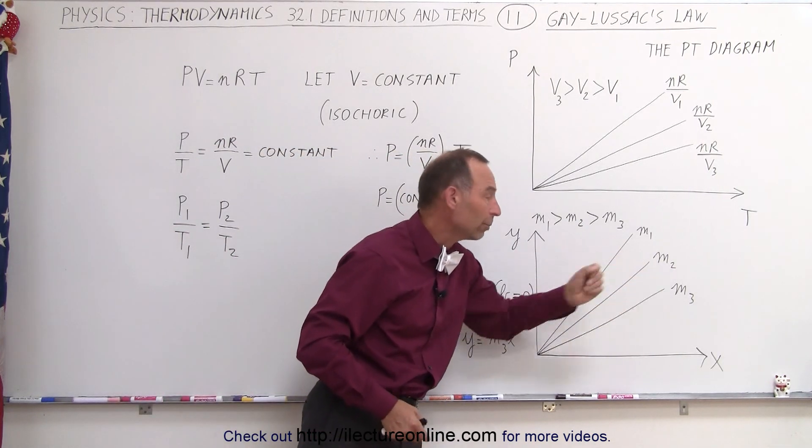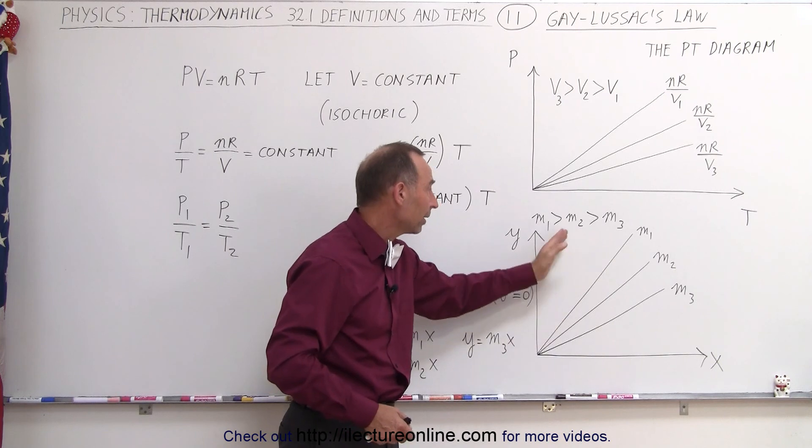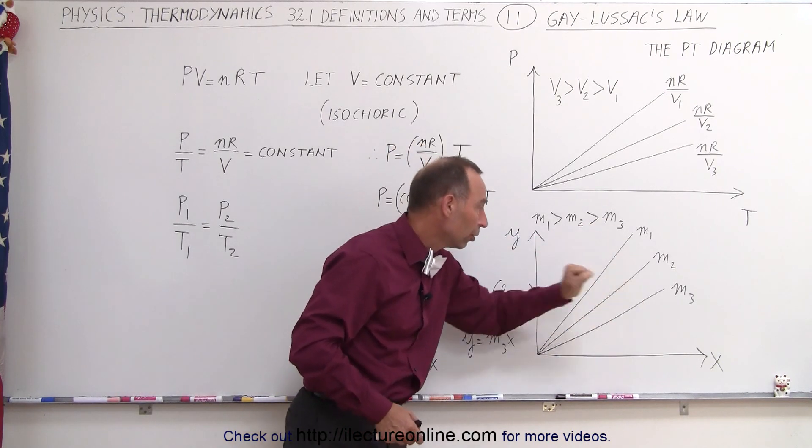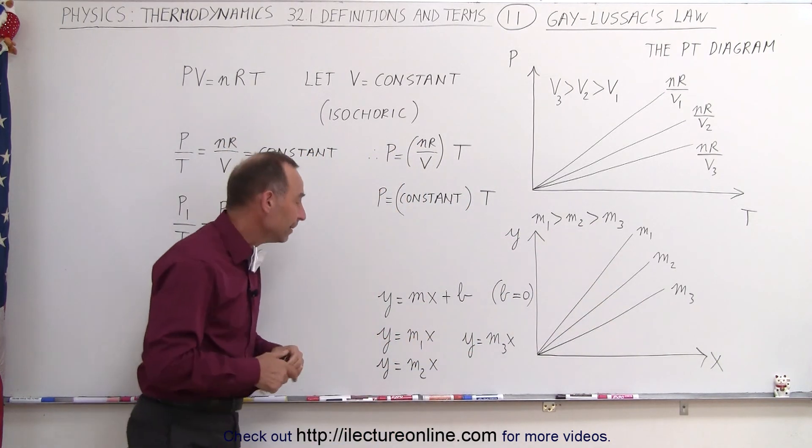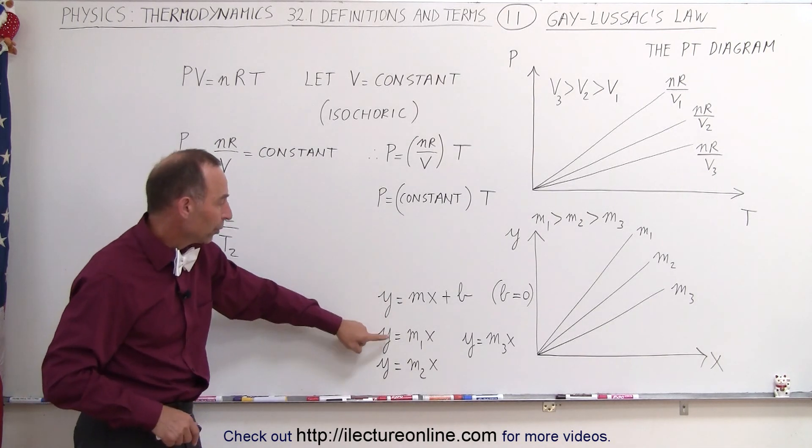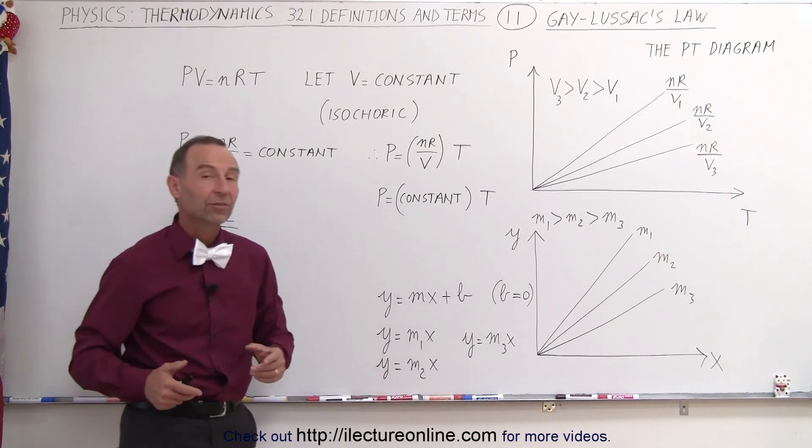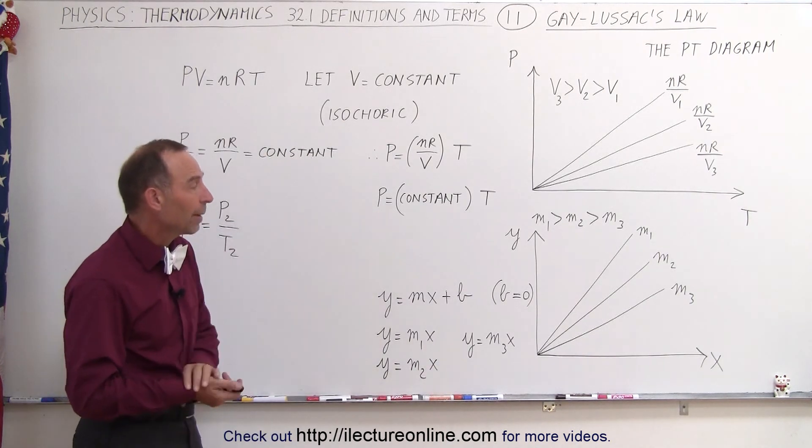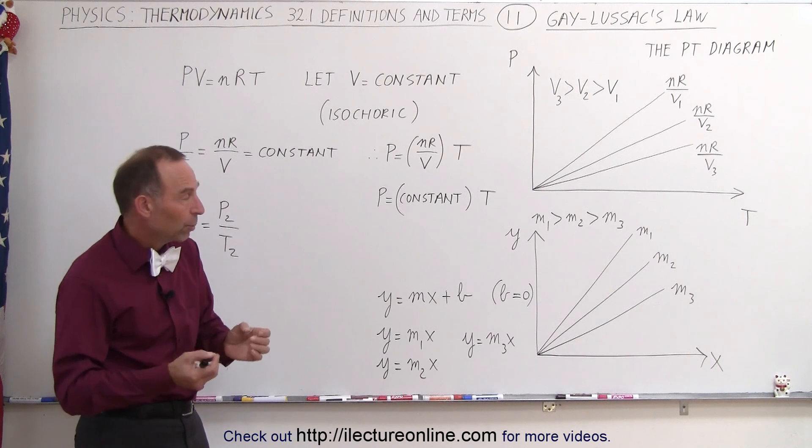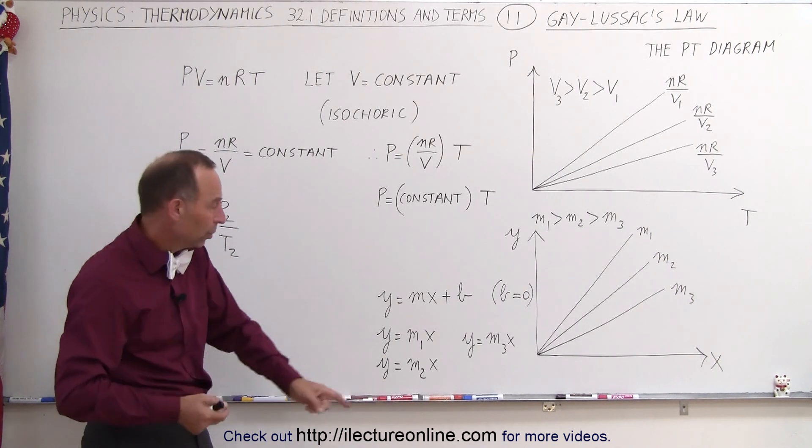But the direction of the line will depend upon the slope of the line. So here, m1, m2, and m3 are considered slopes, and the larger the slope, the steeper the line, the smaller the slope, the less steep the line. And we can write those three equations as y equals m1x, or y equals m2x, or y equals m3x. So there's a relationship between x and y, and the relationship depends upon that slope, m.